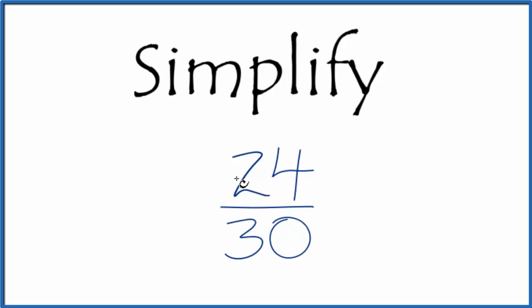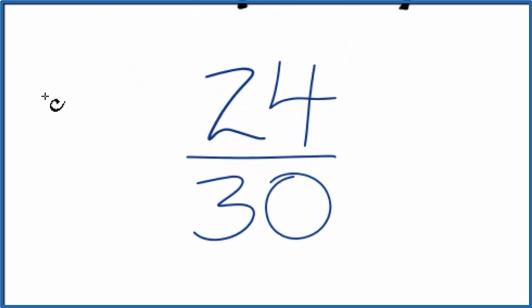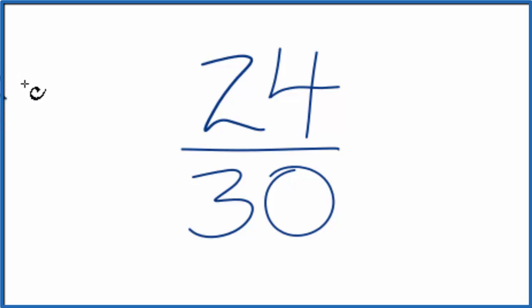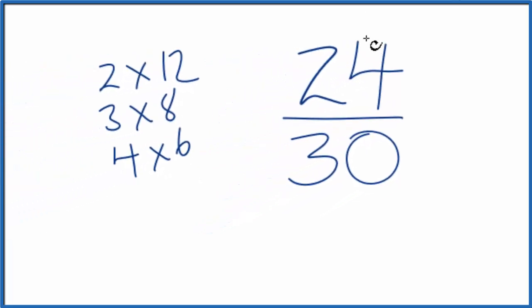But let's list the factors, see if there's something larger we can use. 2 times 12, that's 24. 3 times 8, 4 times 6. For 30 we could do 2 times 15 and 5 times 6. Those are the factors.